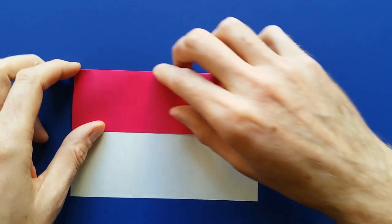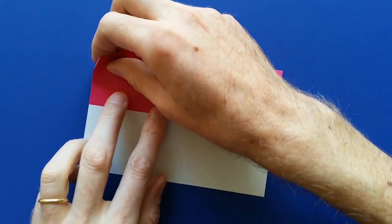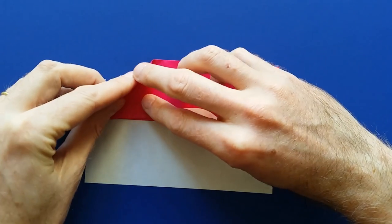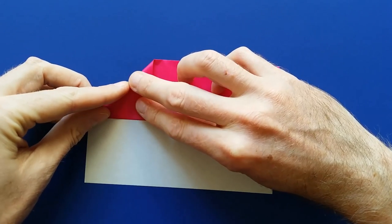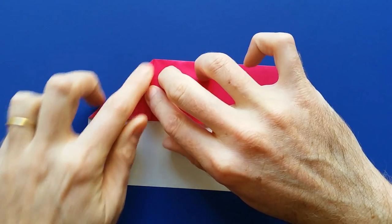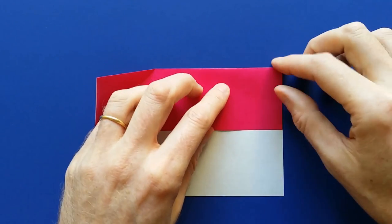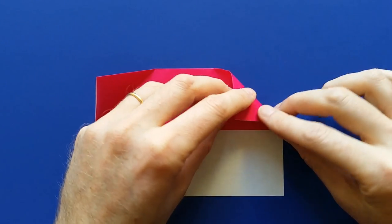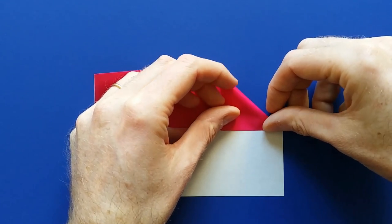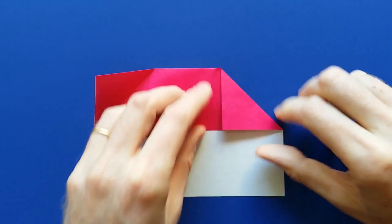And we are going to fold the two corners at this point. Like this. Mark the fold and unfold. Then fold the other corner. Mark the fold and unfold.